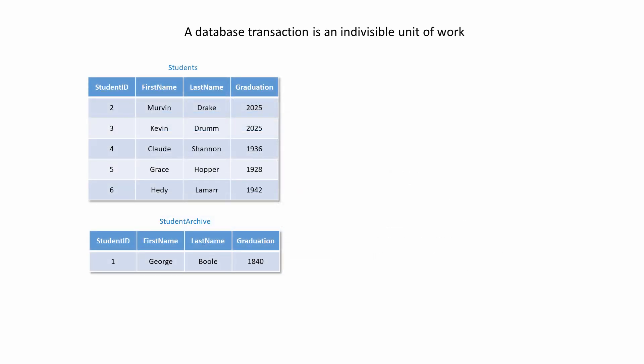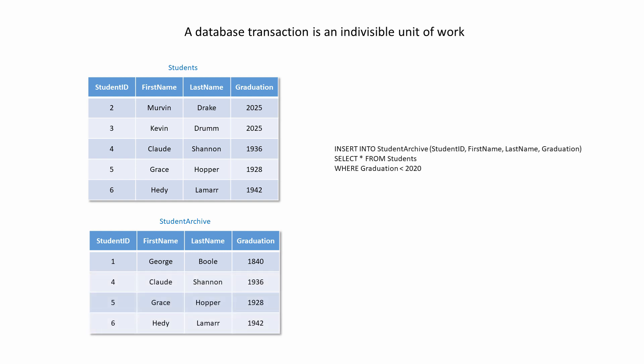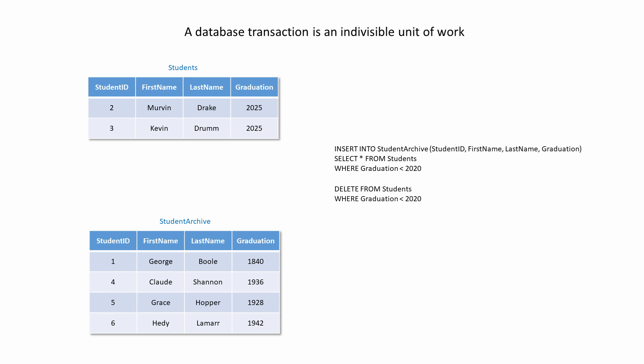In this example, we want to archive some old students. This involves moving a selection of student records from one table to another based on their year of graduation. This could be achieved with an SQL insert statement followed by a delete statement. As before, it may be crucial that both steps are completed successfully, or that neither step happens at all. We don't want to lose any data, and we don't want duplications. These insert and delete operations should therefore be performed as a single, indivisible unit of work — they should be performed as a transaction.